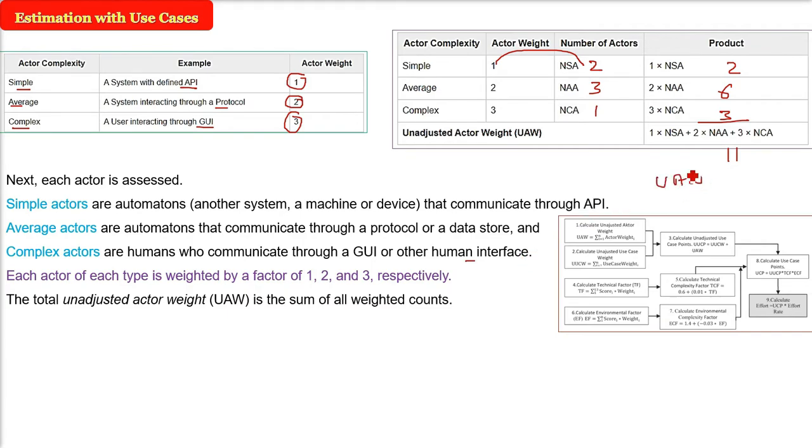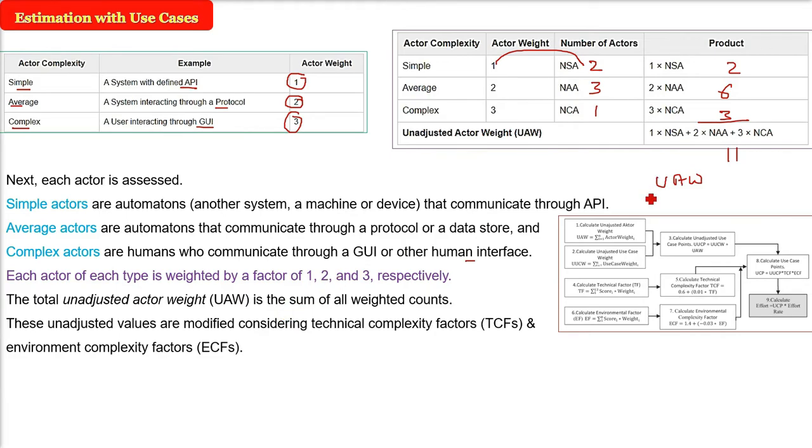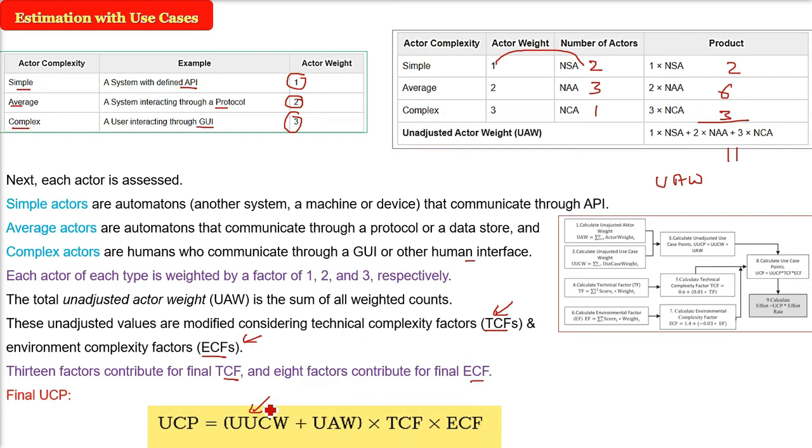We also need TCF and ECF. TCF is technical complexity factor, and ECF is environmental complexity factor. These two values modify the unadjusted values. There are 13 factors that contribute to TCF and 8 factors that contribute to ECF. Once you compute TCF and ECF using the given values, you can finally find the UCP.